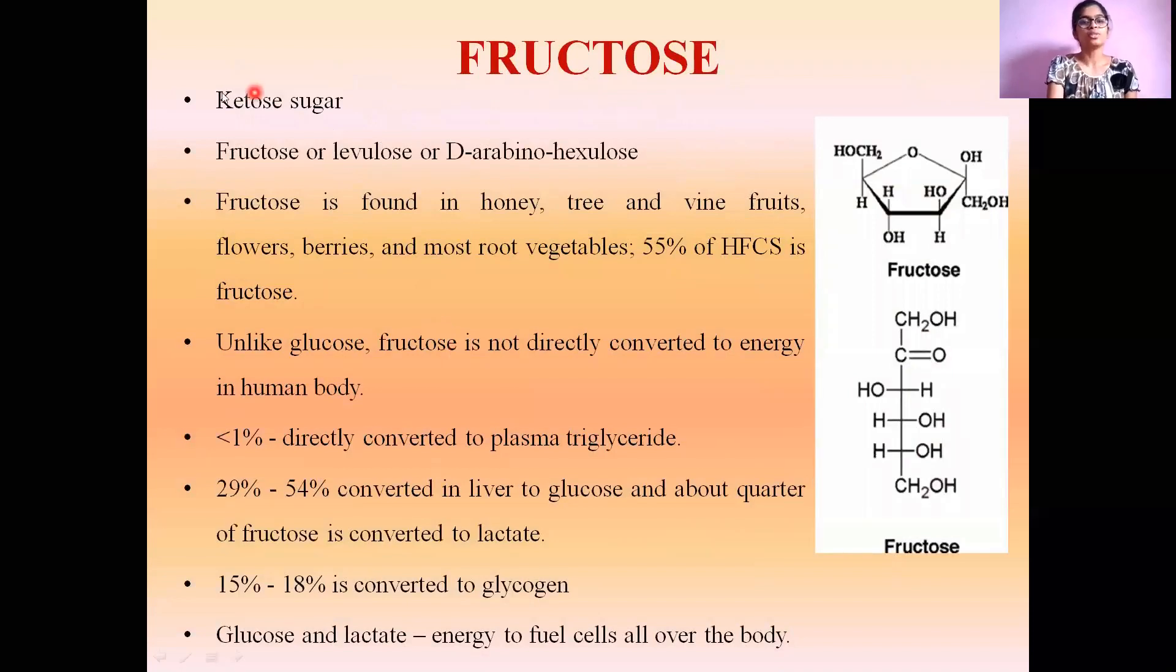Fructose is a keto sugar with the same molecular formula as glucose, C6H12O6. Other names include levulose or D-arabino-hexulose. Fructose is found in honey, tree and wine fruits, flowers, berries, and most root vegetables, and also 55% of high fructose corn syrup is fructose.